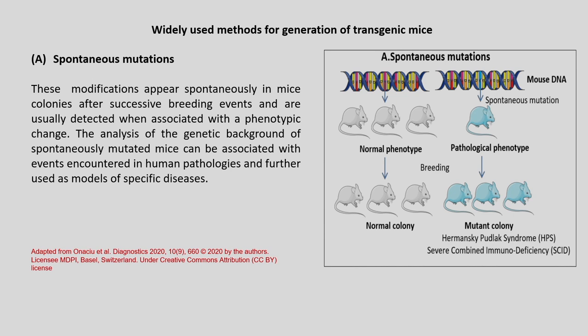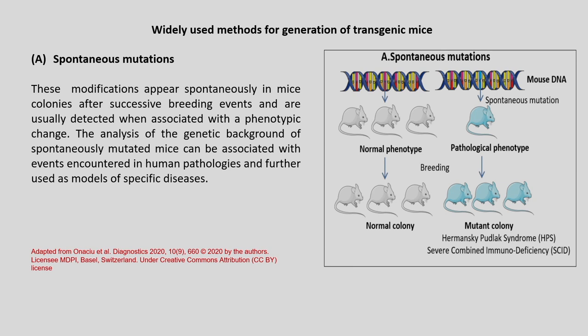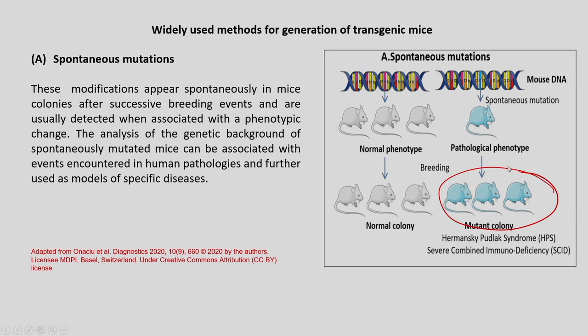Let us discuss some widely used methods for generation of transgenic mice, many of which can be used for generation of disease models. The first is spontaneous mutation: starting from a normal type, a spontaneous mutation produces a pathological phenotype, and through breeding we may get a normal colony or a mutant colony. These spontaneous mutations appear spontaneously in mice colonies after successive breeding events and are usually detected when associated with a phenotypic change. The analysis of the genetic background of spontaneously mutated mice can be associated with events encountered in human pathologies and further used as models of specific diseases.